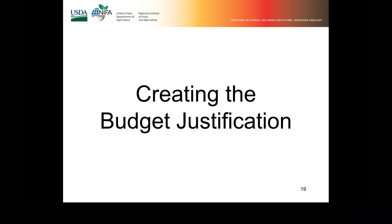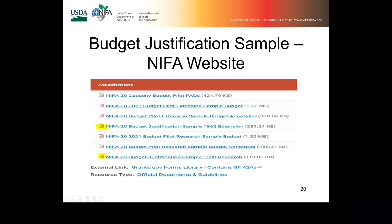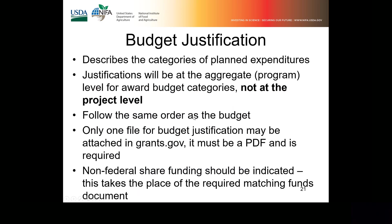Creating the budget justification — this is exactly what it sounds like: justifying your budget. Samples for both research and extension are available as PDFs on our website. The budget justification describes the categories of planned expenditures at the aggregate or program level for award budget categories — not at the project level. Follow the same order as the budget, starting with carryover funds if applicable, then personnel, then fringe. Only one file for budget justification may be attached in grants.gov, it must be in PDF format, and it is required. The non-federal share funding should be indicated at the end and takes the place of the required matching funds document.